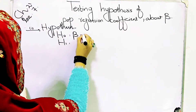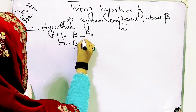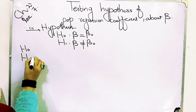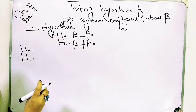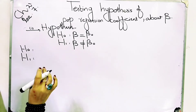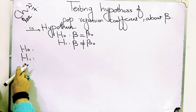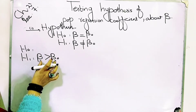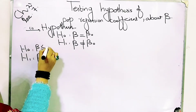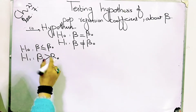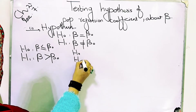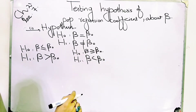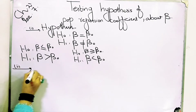The three types are: first, the null hypothesis H0: β = β₀ and alternative hypothesis H1: β ≠ β₀. Second, the alternative hypothesis H1: β > β₀, which is the greater-than case. Third, the alternative hypothesis H1: β < β₀, which is the less-than case. These are the three situations that can arise in hypothesis testing.